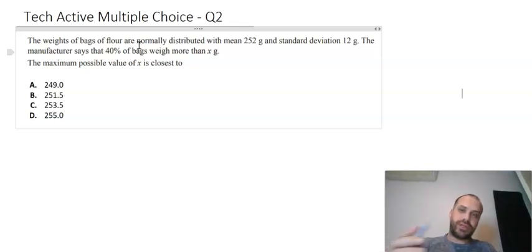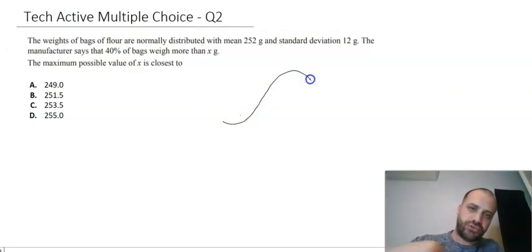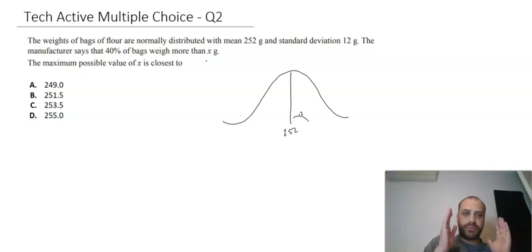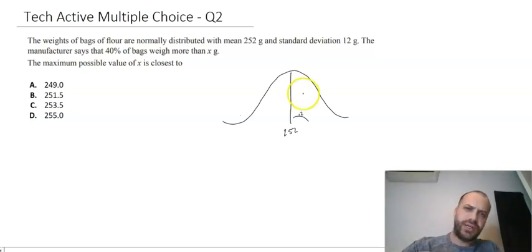It says normally distributed here, so I really encourage you to draw the normal distribution. It says we've got a mean of 252 and a standard deviation of 12. You don't need to draw it in like that, but I find it useful. It says the manufacturer says that 40% of bags weigh more than x.